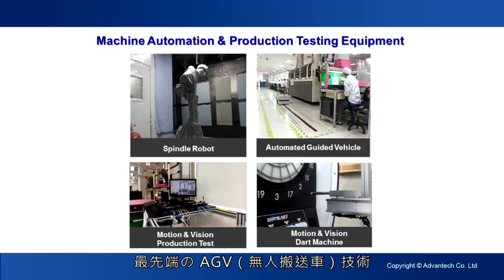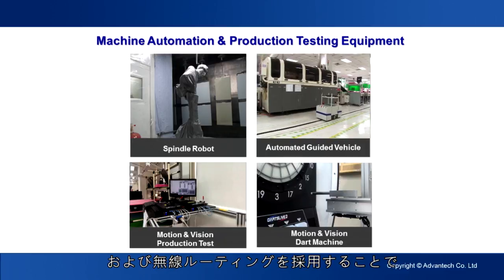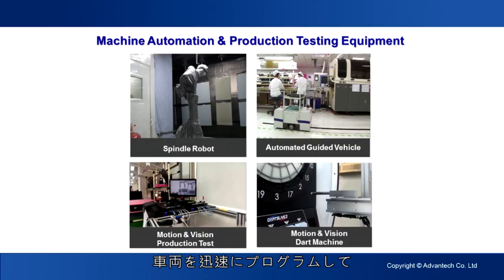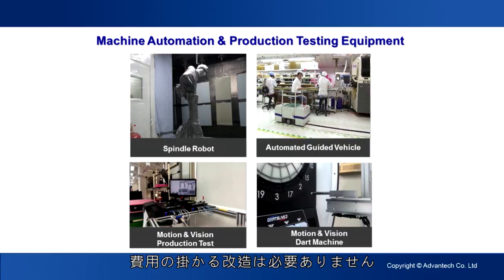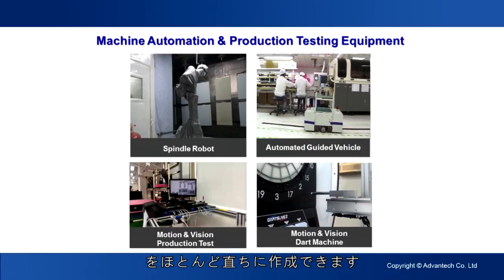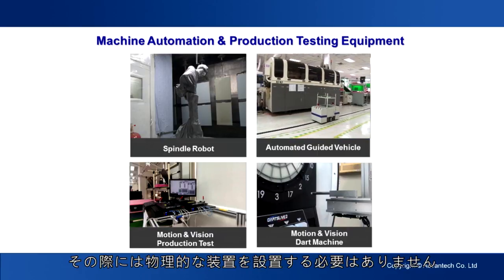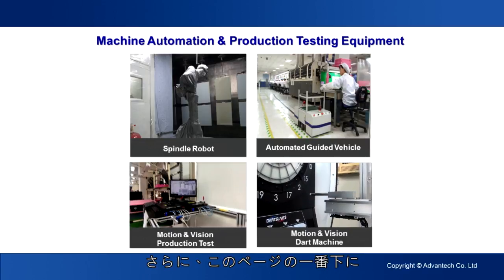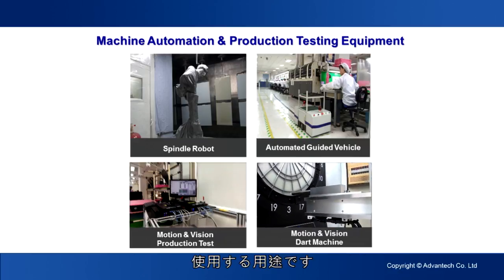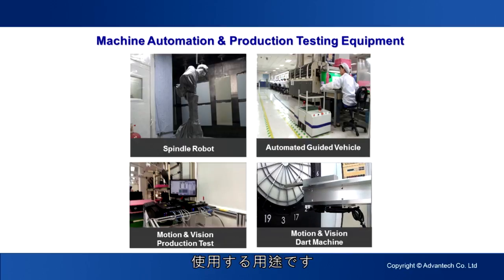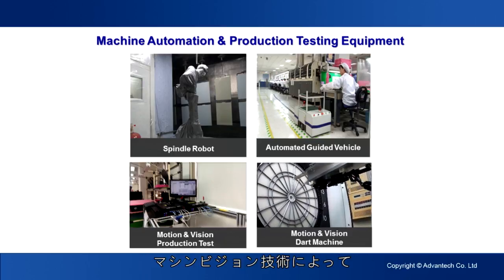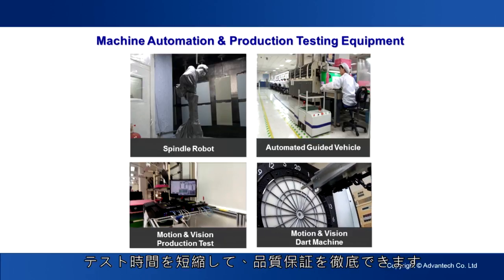Another example of saving human resources through machine automation is the application of AGV. Through the use of advanced AGV technology and wireless routers, vehicles can be quickly reprogrammed to change paths and operations, eliminating the need for expensive retrofitting. New directions, tasks, or layouts can be created almost instantaneously without the need for physical equipment installation. Additionally, production test equipment (PTE) can help production lines save testing time and gain more quality assurance using automatic motion control and machine vision technology.